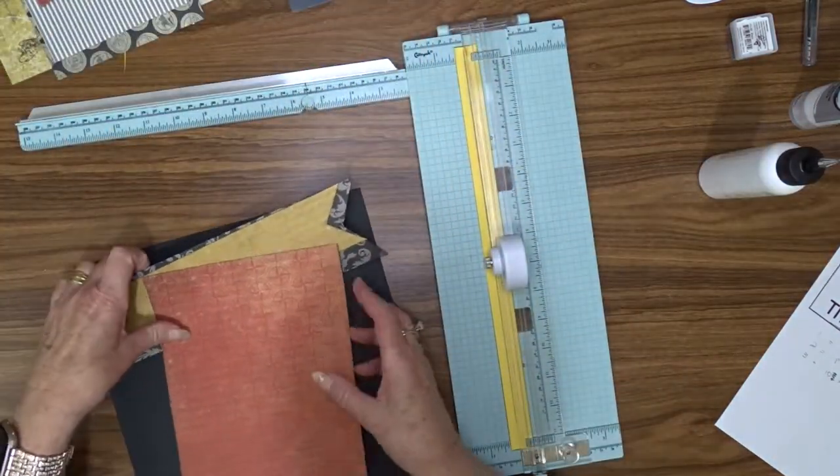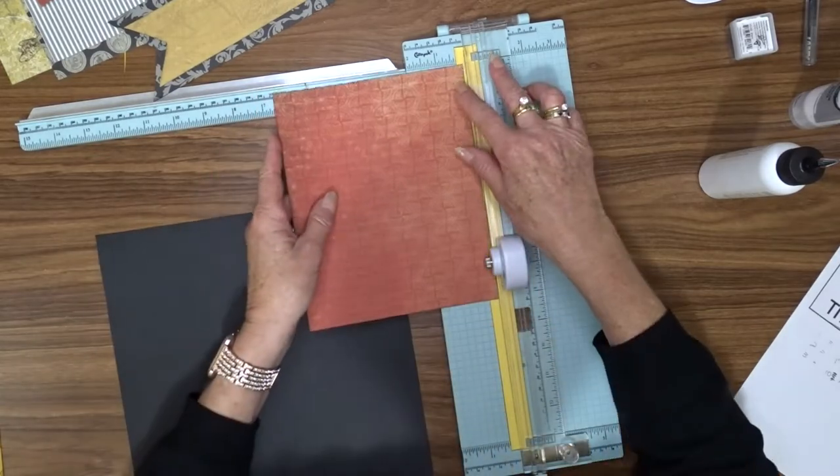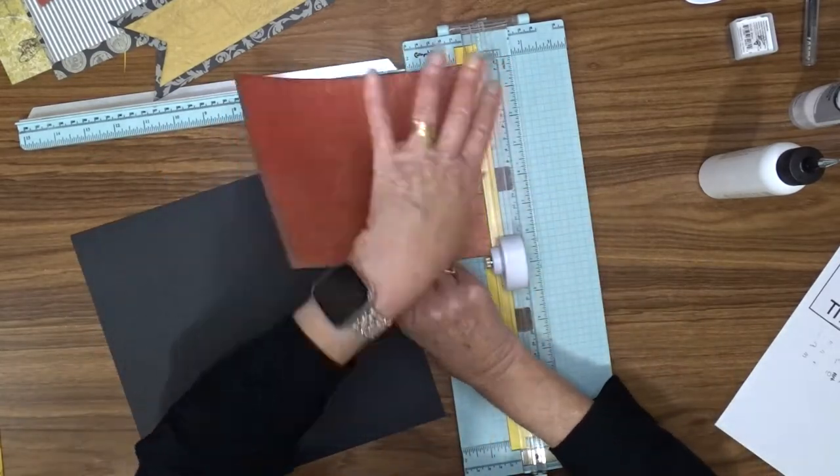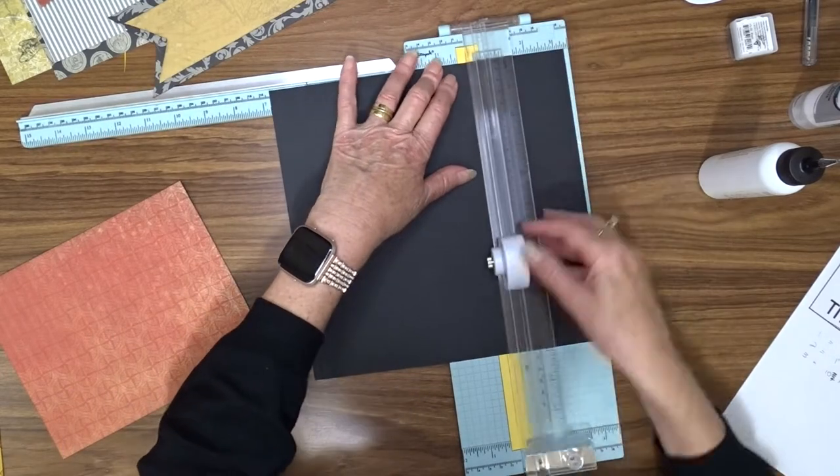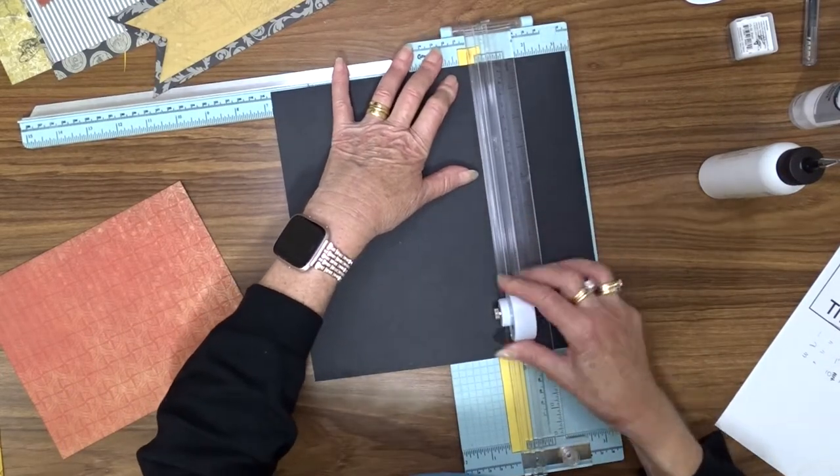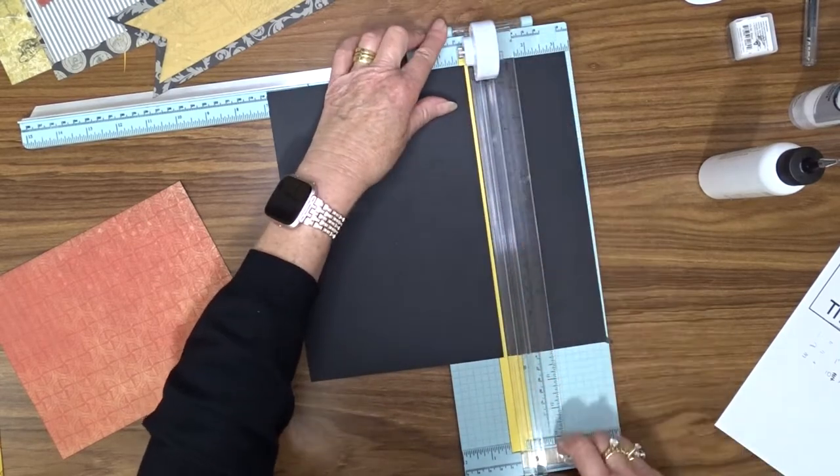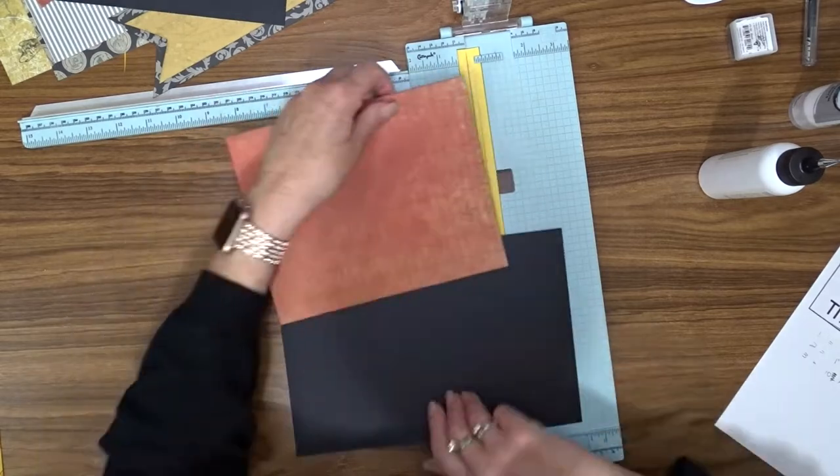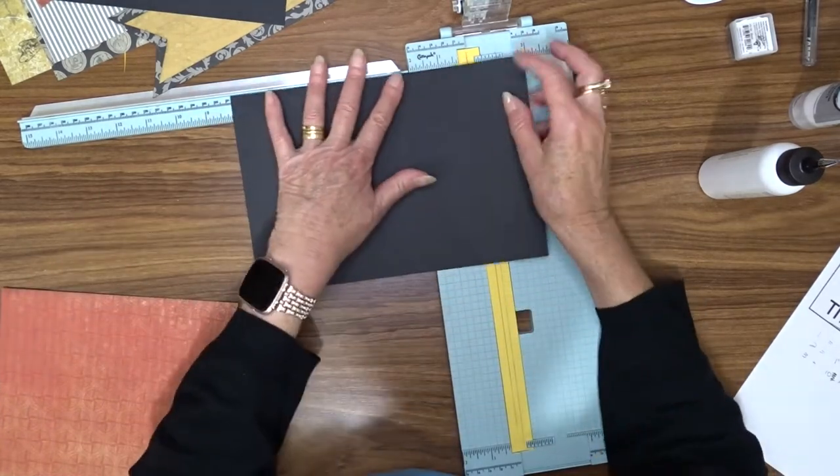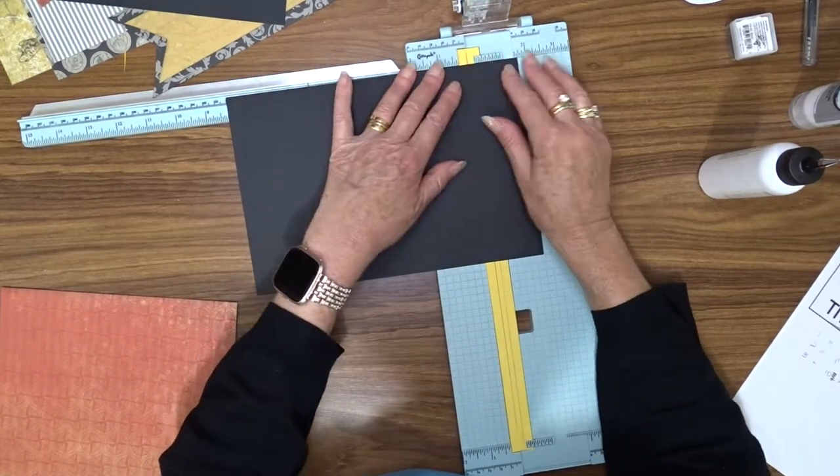My layout took another unforeseen turn here as well. I decided to mat all of my pattern papers onto black cardstock. So I went ahead and cut a mat for the three pattern papers and the two photos. I cut them a quarter of an inch bigger than the pattern paper.